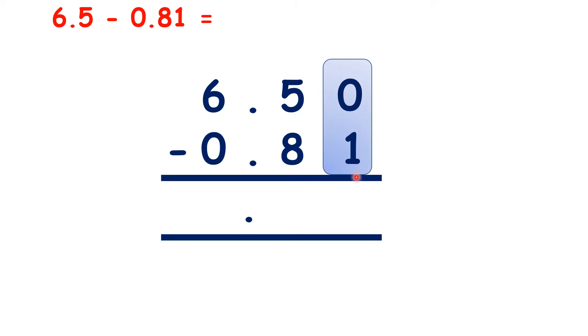Now as always with column subtraction, we start with the smallest place value column, our hundredths. We can't do 0 minus 1, so let's exchange. So now we have 10 minus 1, which is 9.